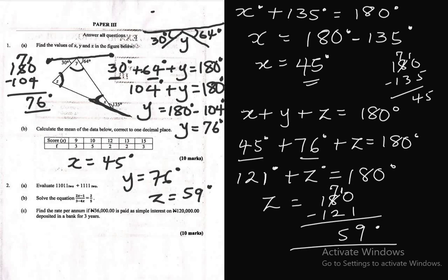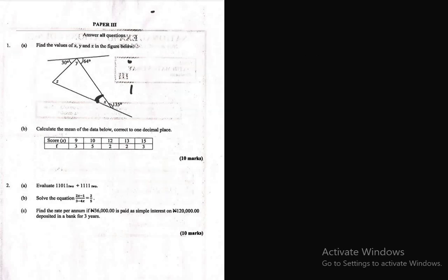So you can gently copy this into your note or somewhere for reference sake. Now we are done with this. We need to go to question 1B. Question 1B says calculate the mean of the data below, correct to one decimal place. Now we have this: 9, how many times did 9 appear? The frequency is 3.